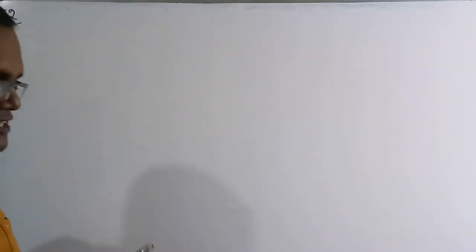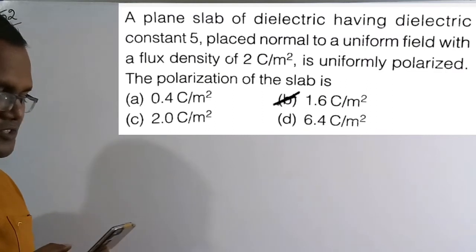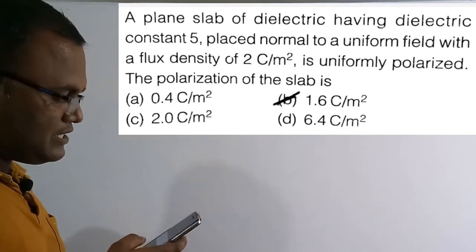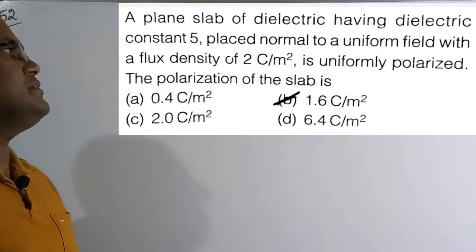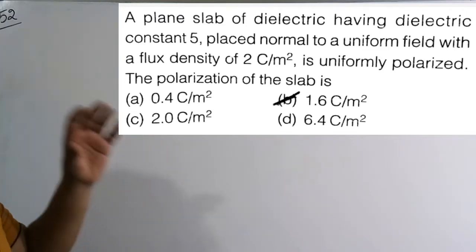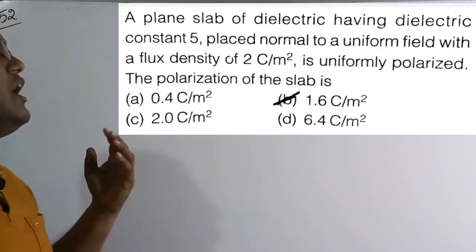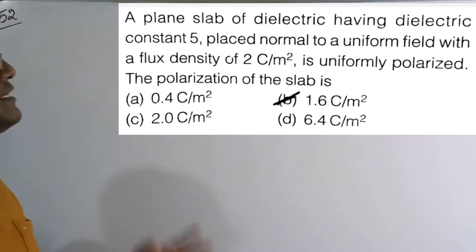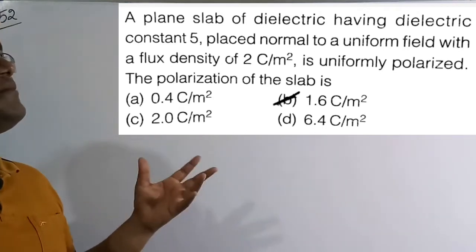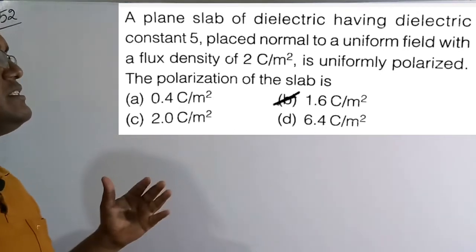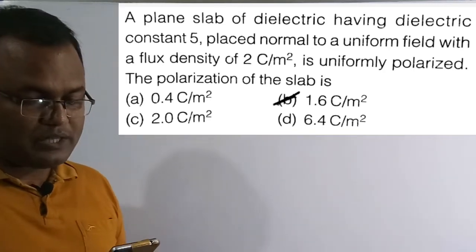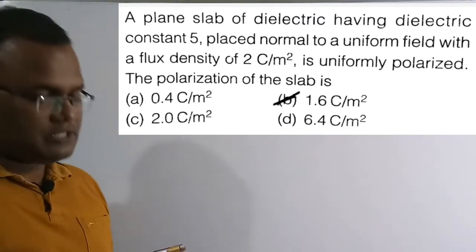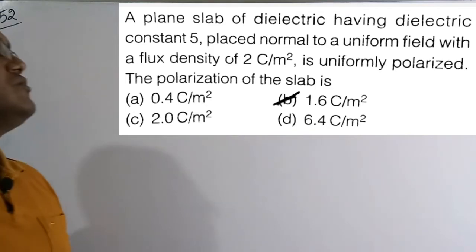Now we solve the 52nd question. A flat slab of dielectric having dielectric constant phi (epsilon_r equals 5) placed normal to a uniform field with flux density of 2 C/m² is uniformly polarized. What is the polarization of the slab? Option B, which is 1.6 C/m², is the correct solution.